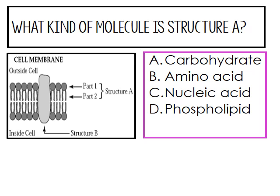Quiz time. What kind of molecule is structure A? Is it a carbohydrate, an amino acid, a nucleic acid, or a phospholipid? If you answered D, phospholipid, you are correct. As you can see, you have two parts — your hydrophilic head and your hydrophobic tails. Those are your phospholipids.